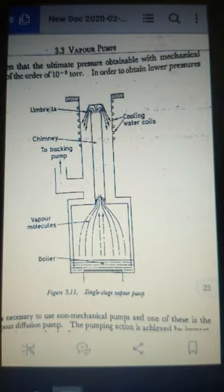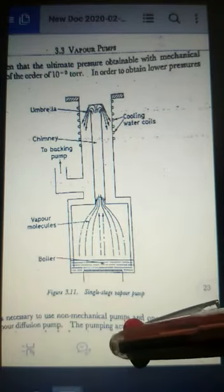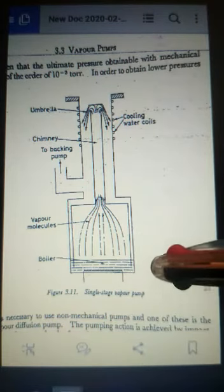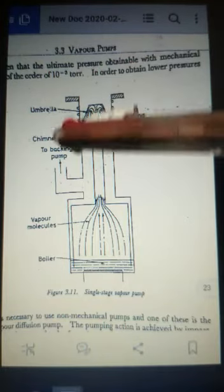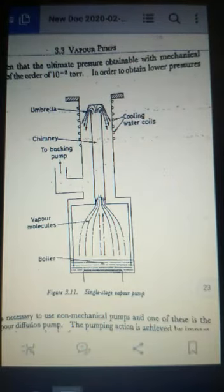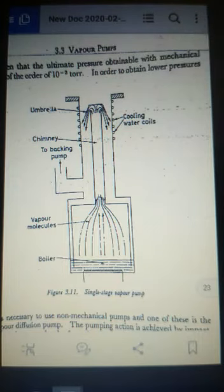The pumping action is achieved by imparting to the gas molecules from the system a momentum in the direction towards the exhaust by means of high speed stream of molecules. The principle and operation is illustrated as shown in the figure. The pump consists essentially of a cylindrical body at base which is a boiler containing suitable fluid. Provision is made for cooling the upper part of the body either by water jets. A chimney projects from the boiler and mounted above the chimney is an umbrella shaped deflector or jet.